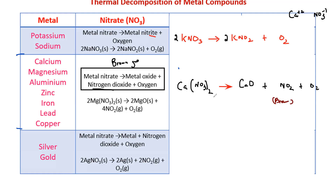To balance the calcium nitrate equation, start with oxygen: 3 × 2 = 6 on the left, so place a coefficient of 2 to balance oxygen on the right (2 + 2 + ... gives 6). Then balance calcium: coefficient 2 gives 2 calcium on each side. Then nitrogen: 2 × 2 = 4 nitrogens, so place 4 before NO2. Now oxygen, nitrogen, and calcium are all balanced.